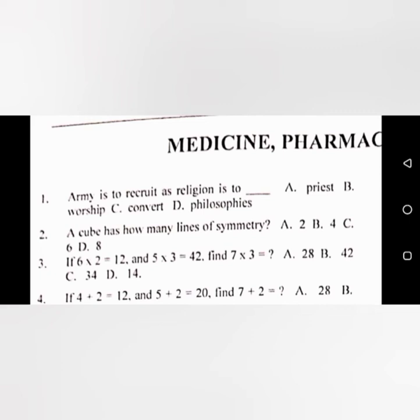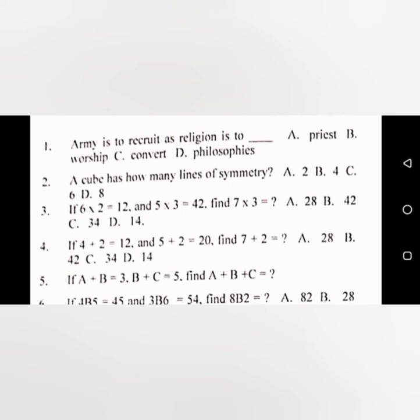Let's go to number three. If 6 times 2 equals 22, and 5 times 3 equals 42, then 7 times 3 equals what? We're going to solve it — I'm going to show you how to solve that particular question, so just keep the equation in mind.